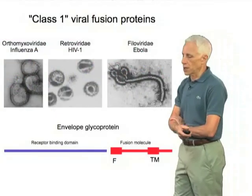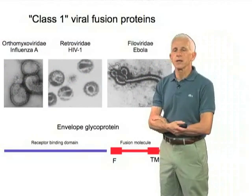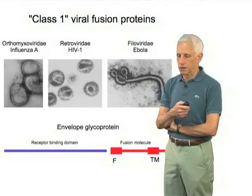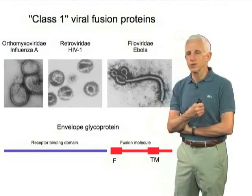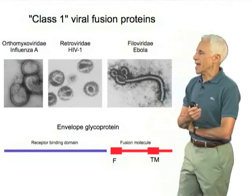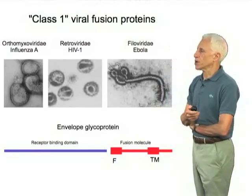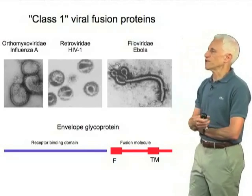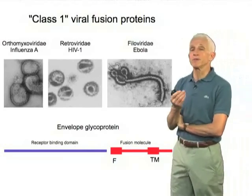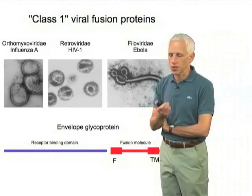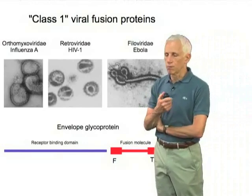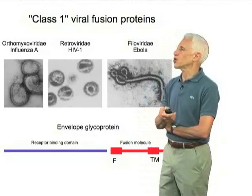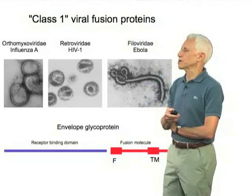We'll talk almost entirely about the fusion protein of influenza virus, the so-called hemagglutinin. It's a member of a class of viral fusion proteins, all of which have the following properties, and sometimes, because they were the earliest ones characterized in molecular structural terms, have come to be called class 1 viral fusion proteins.